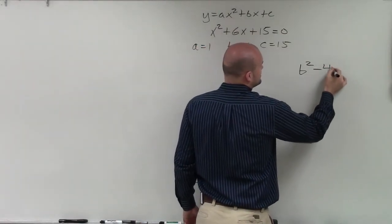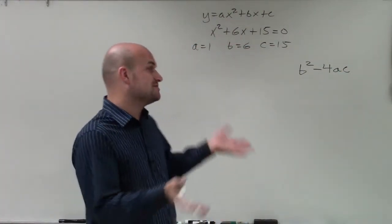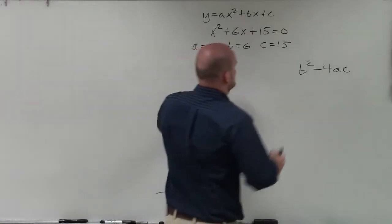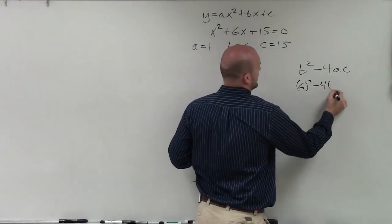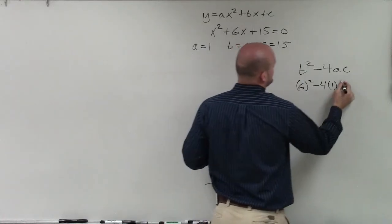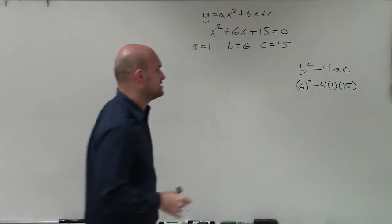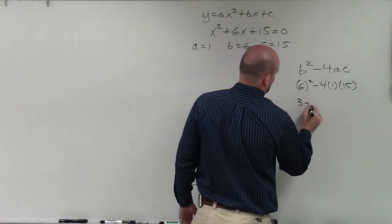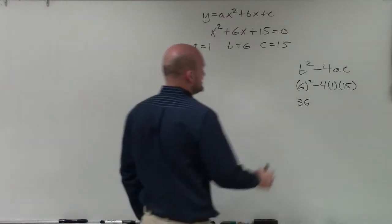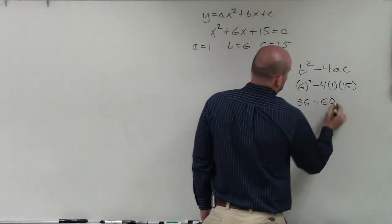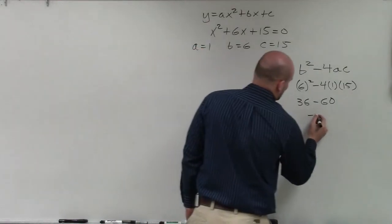So the discriminant is b squared minus 4 times a times c. Now what I'm simply going to do is take those values and plug them into the equation. So therefore, I'll have 6 squared minus 4 times a, which is 1, times c, which is 15. Well, 6 squared is going to be equal to 36, and negative 4 times 15 is going to be 60. So I'm going to have 36 minus 60. Well, that's going to equal negative 24.